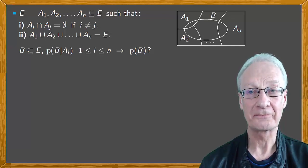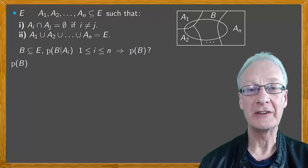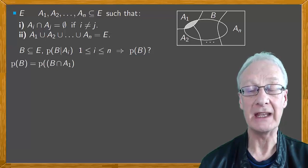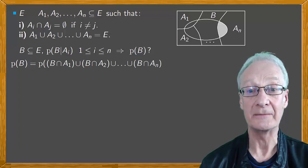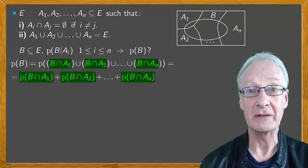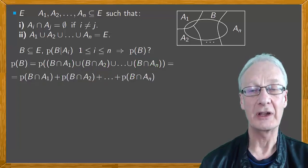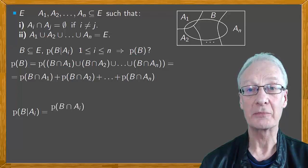If we plot B in a diagram, we have that B is the disjoint union of the intersection of B with each of the Ai. Then the probability of B is the probability of the intersection of B with A1, union the intersection of B with A2, and so on, until we come to union with the intersection of B and An. Since these events constitute partitions of B, the probability of this union is the sum of these probabilities. Now, if we consider an event Ai, the conditional probability formula tells us that the probability of B conditional on Ai is the probability of the intersection divided by the probability of Ai.